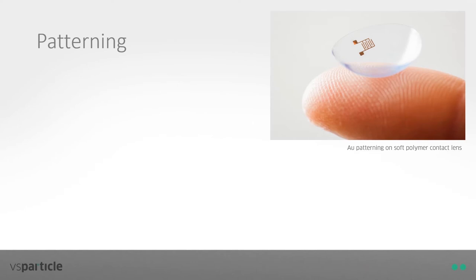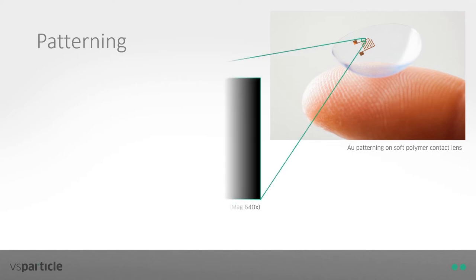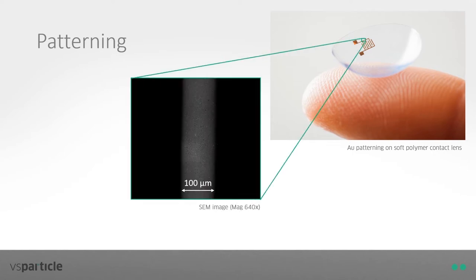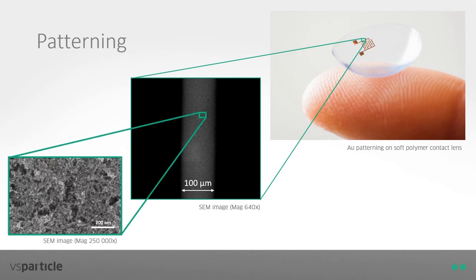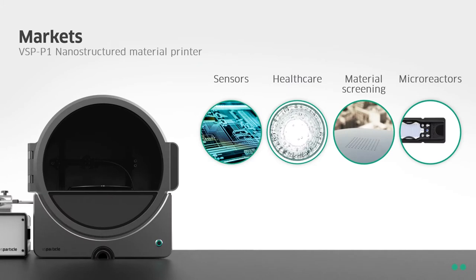Here we show the deposition of our nanoparticles on a contact lens, which is a flexible polymer. We're able to achieve a line thickness of 100 micrometers of gold deposited on the contact lens, and if we zoom in further, we see that this is indeed a continuous nanoporous film deposited onto this contact lens. There are several markets in which we see the VSP-P1 adding value, including sensor development, healthcare, material screening, and microreactor development.